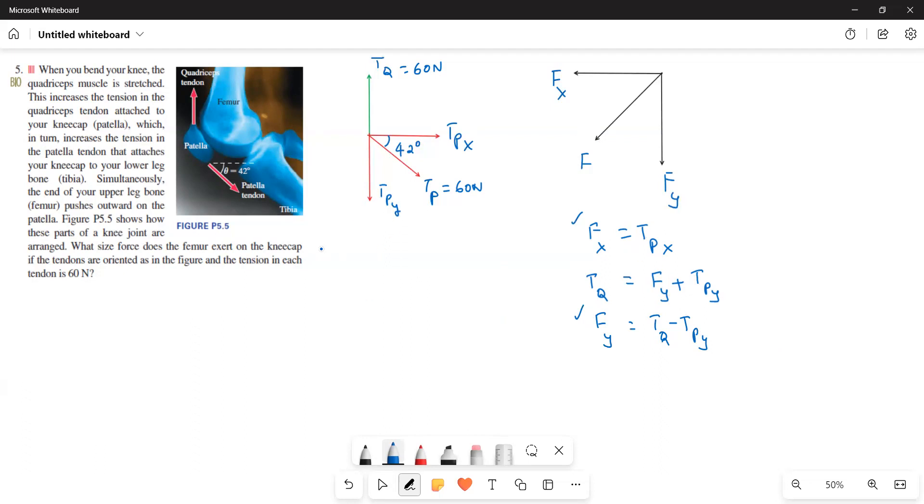TPy is equal to, this is the perpendicular direction of the 42 degrees. Am I right? So moreover, it is downward. Agree? So what I do is, TPy is equal to 60 sin 42. And then what is this value? 60 sin 42 is equal to 40.1478 N.